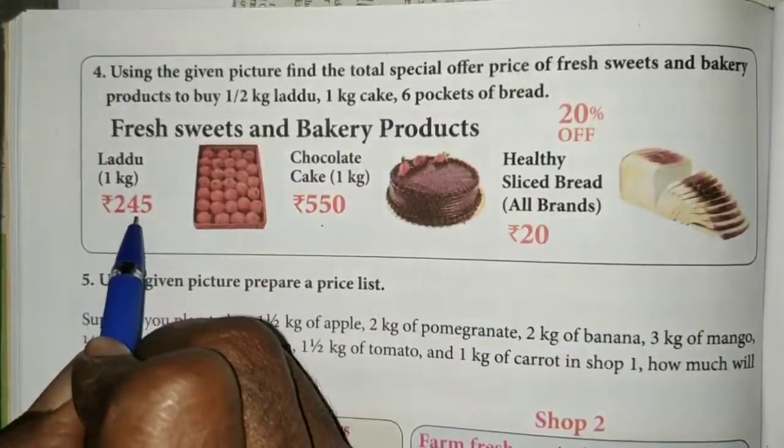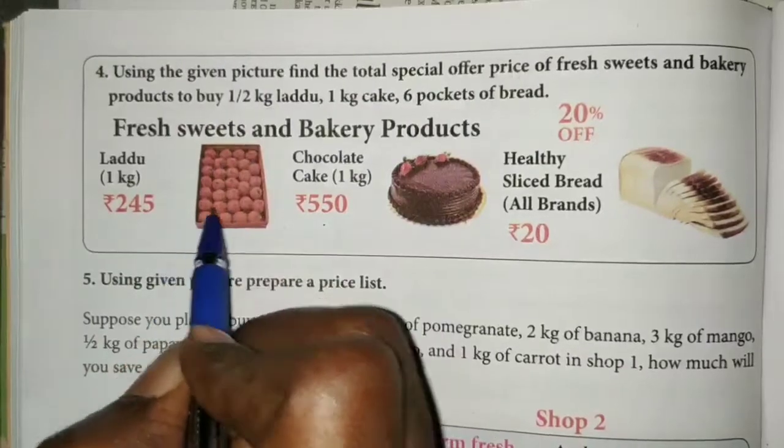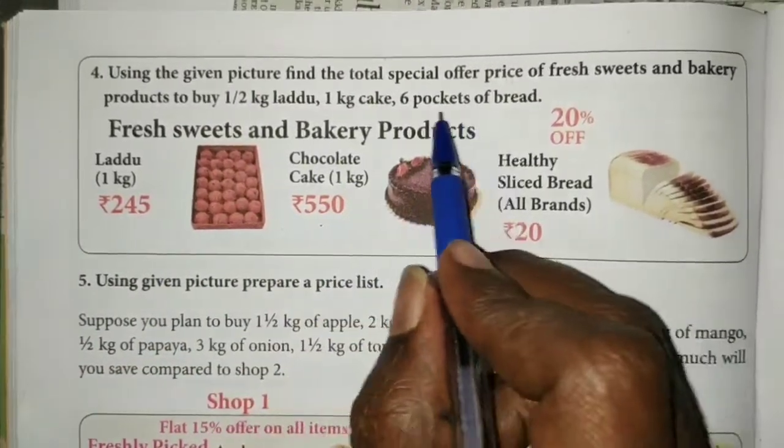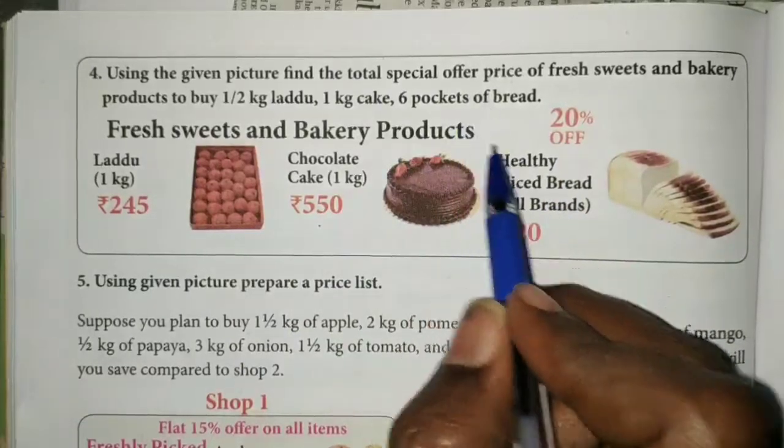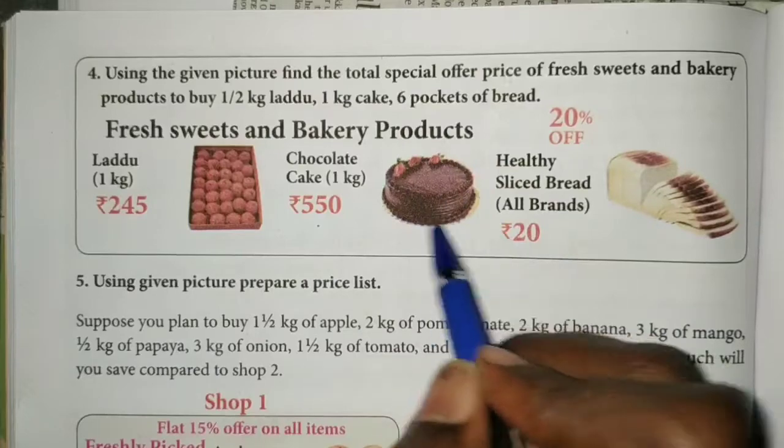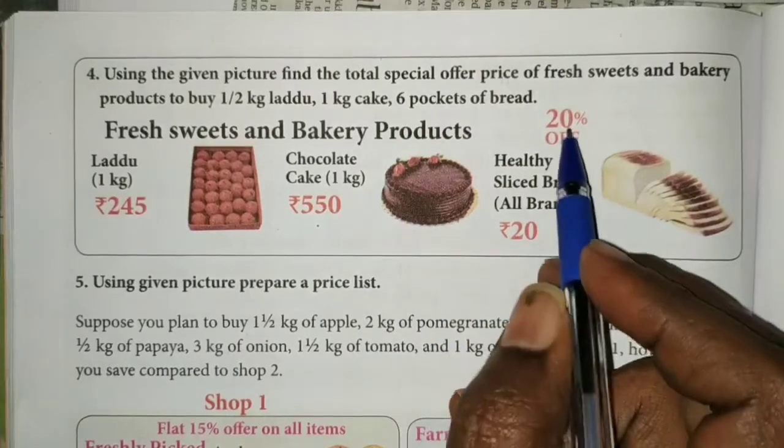The laddu is 1 cage for 245 rupees, the chocolate cake is 1 kg for 550 rupees, and the healthy sliced bread is 20 rupees per packet. There is a 20 percent off offer.